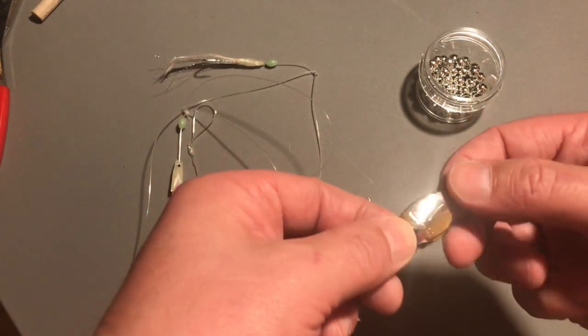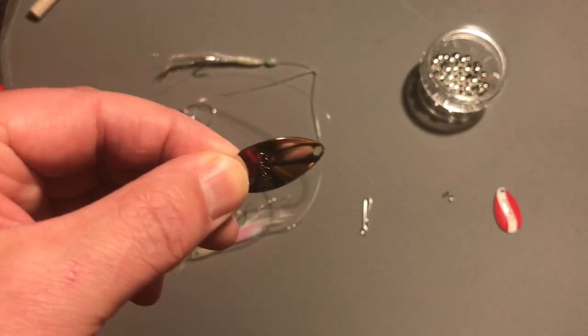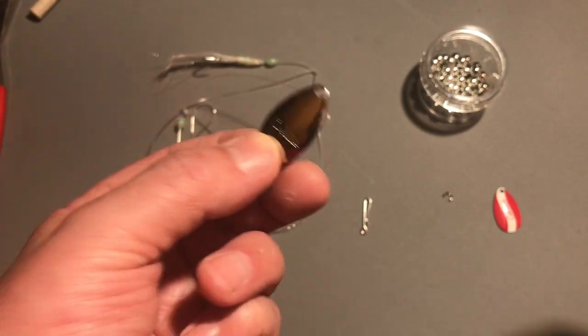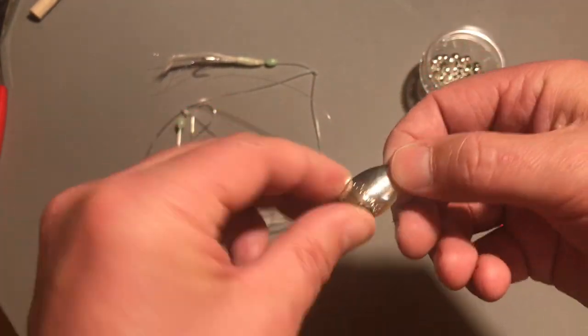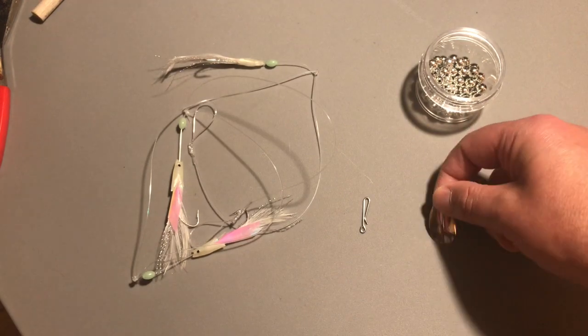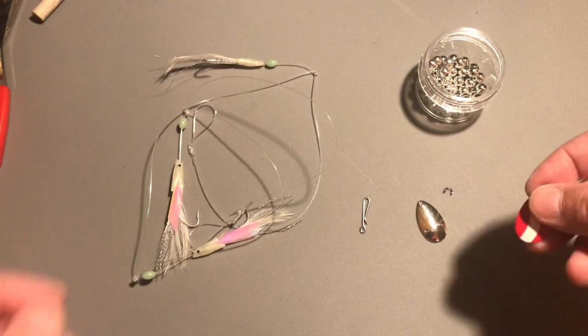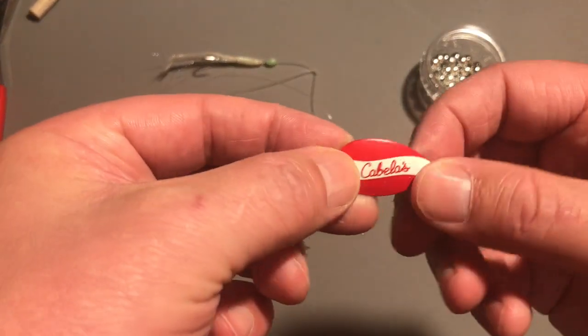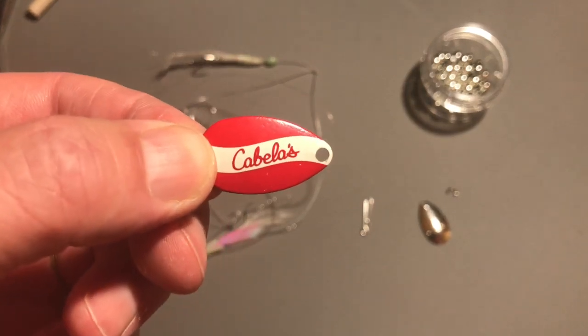Then you need your spinner blade or spoon. These are 1 inch and you can get these on eBay. You get them all different colors but these are made by Cabela's.